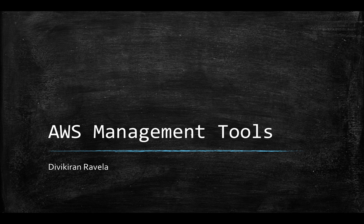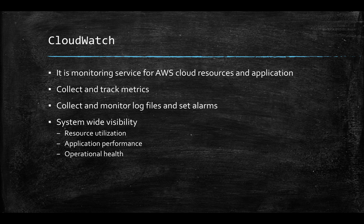We'll start off with AWS CloudWatch. As the name goes, it watches the AWS cloud resources for you and even the applications inside it. Basically, it collects and tracks the metrics for each resource you have configured, and it also collects and monitors log files and sets alarms if required. For example, if a resource is going over your budget, it can set alarms for you. So it provides system-wide visibility into resource utilization, application performance, and operational health.